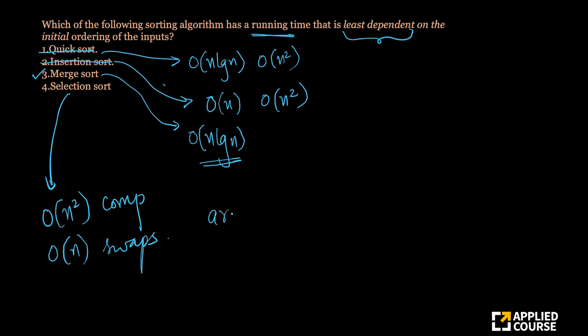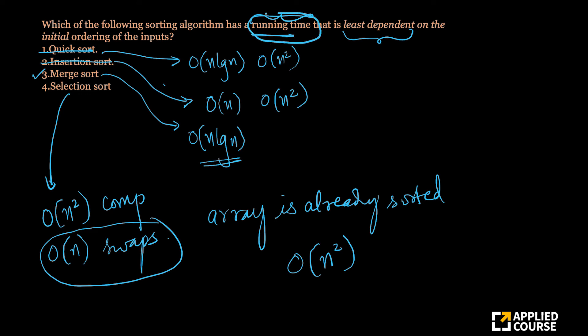Now, if you look at it, if your array is already sorted, then you would not need these swaps, which means the eventual running time, even though the complexity, the overall complexity is still order of n square, the eventual running time of the algorithm itself, because we have discussed that swaps or writes take more time than reads.